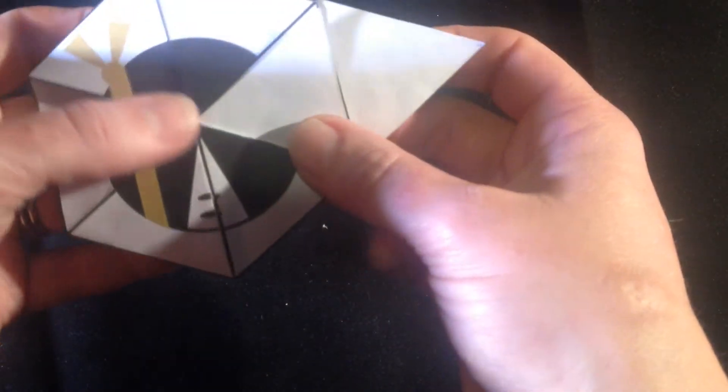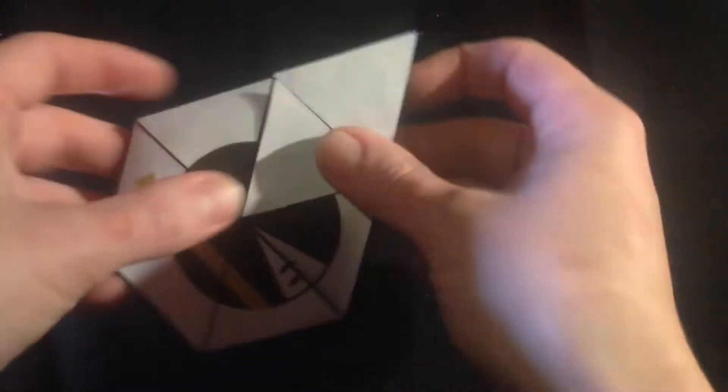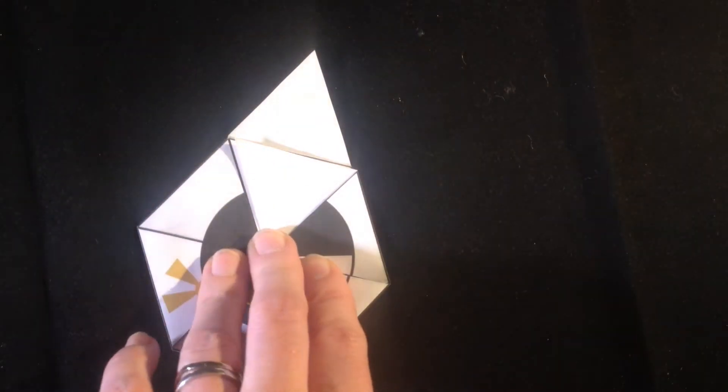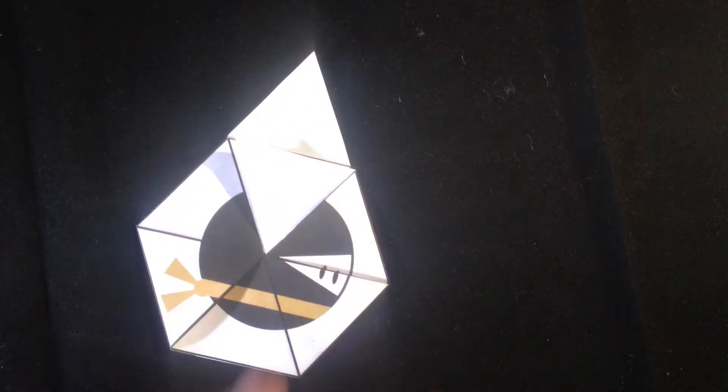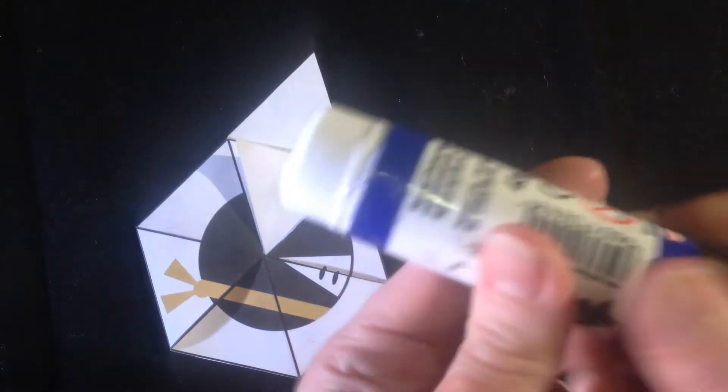Turn it over and it should show the face of the Grand Master Ninja. You will have two blank white triangles showing. You need to glue these two together to complete the face of the Grand Master Ninja.